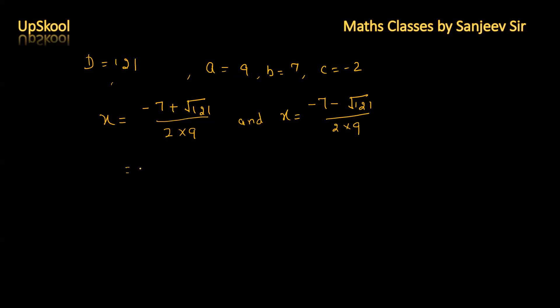We have minus 7 plus 11 upon 18 and x equals minus 7 minus 11 upon 18. That comes out to be 4 upon 18, and x equals minus 18 upon 18. On solving x equals 2 by 9 and x equals minus 1.